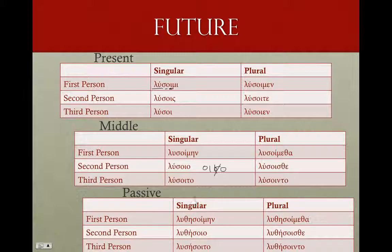If we take a look at the future passive, we're going to have to take our sixth principal part, drop off the epsilon augment, add our sigma to the stem, our theme vowel, our iota marker, and our endings — middle-passive endings. So: λυθησοίμην, λυθήσοιο — again, that's the intervocalic sigma dropping out — λυθήσοιτο, λυθησοίμεθα, λυθήσοισθε, and λυθήσοιντο.